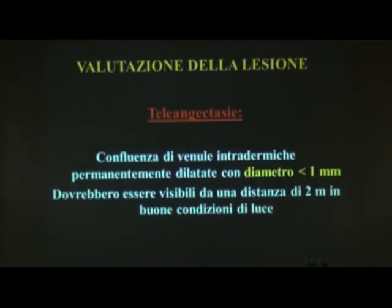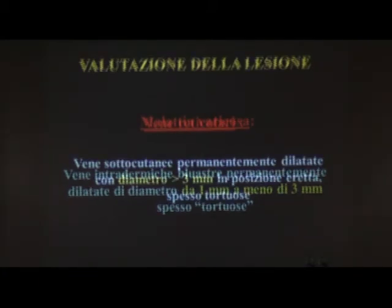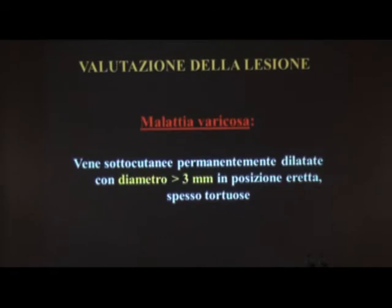Le teleangiectasie sono quelle venule intradermiche che rientrano in un diametro al di sotto di un millimetro. Le vene reticolari vanno da un millimetro a meno di tre millimetri e sono spesso tortuose. La malattia varicosa vera e propria presenta vene sottocutanee permanentemente dilatate con un diametro maggiore di tre millimetri in posizione eretta.